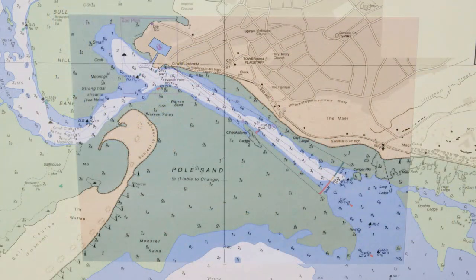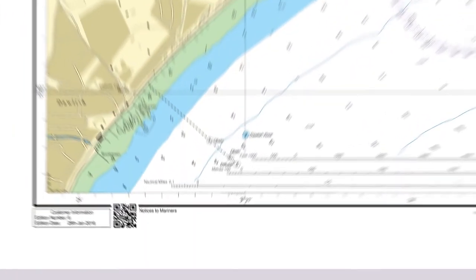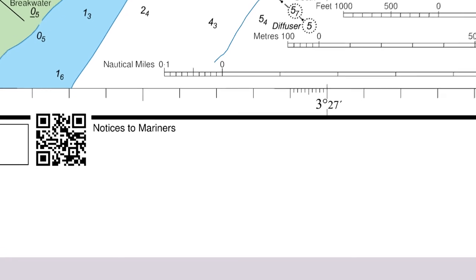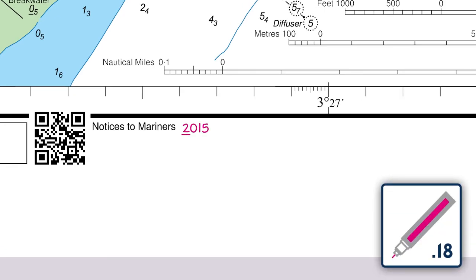Once complete, recheck that the block position is correct and that no information has been missed. Finally, add the NM update number to the chart's notices to mariners section in the bottom left corner of the chart.